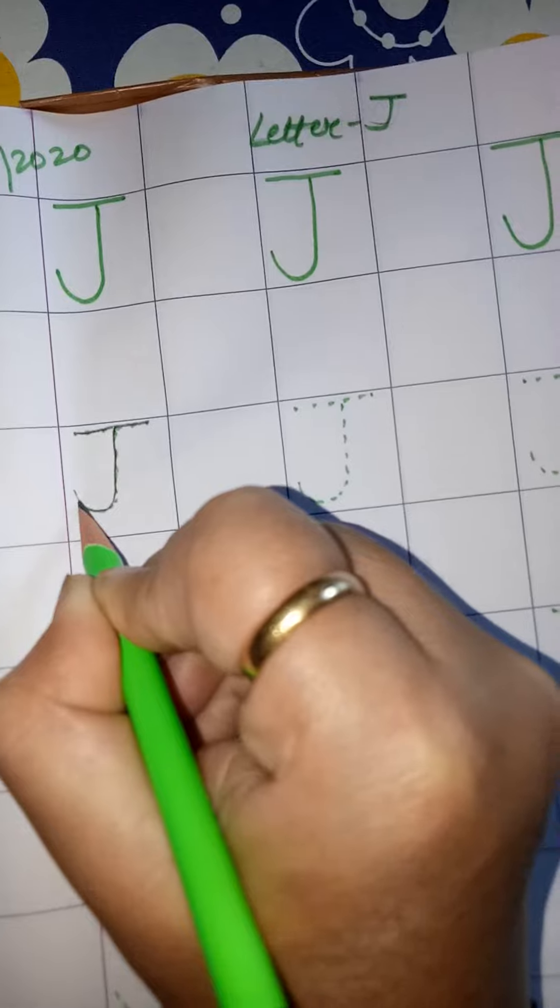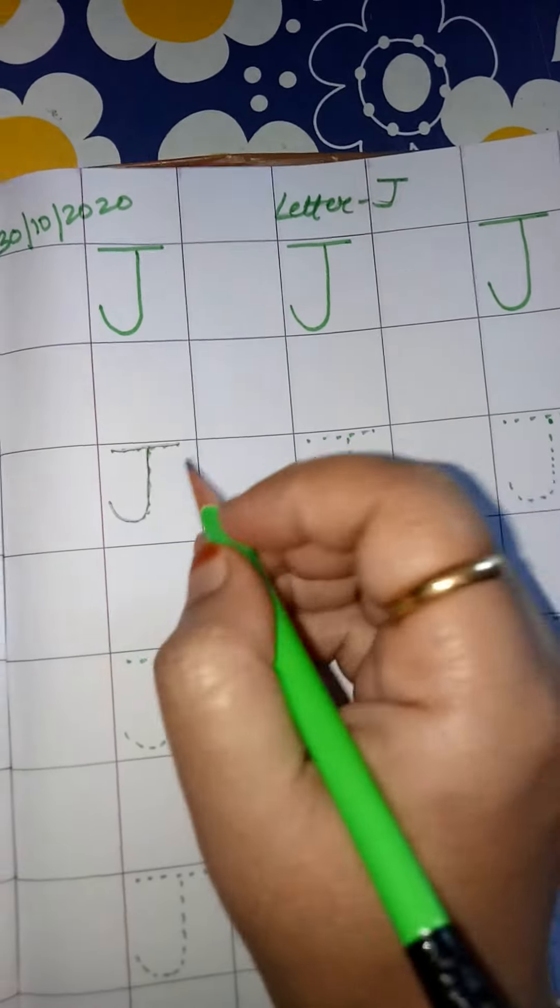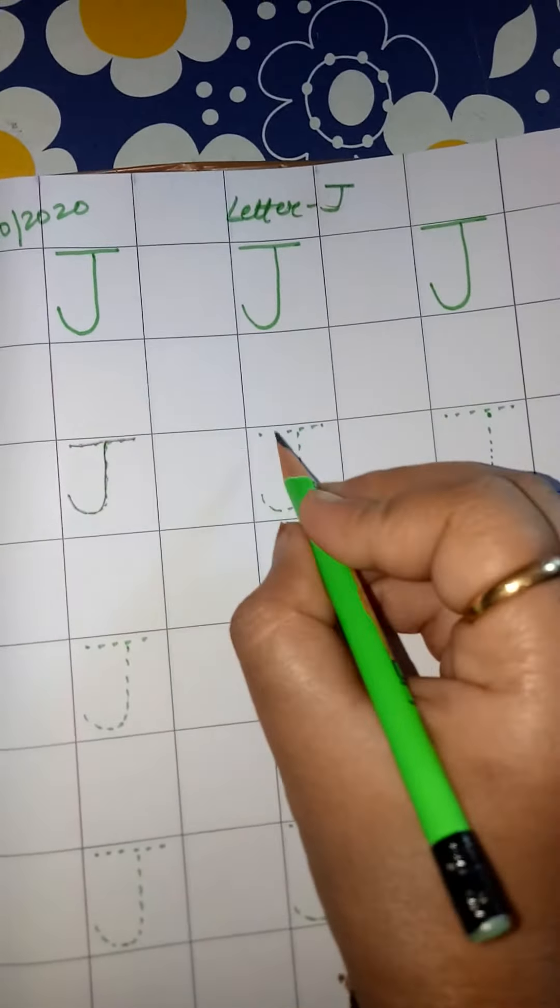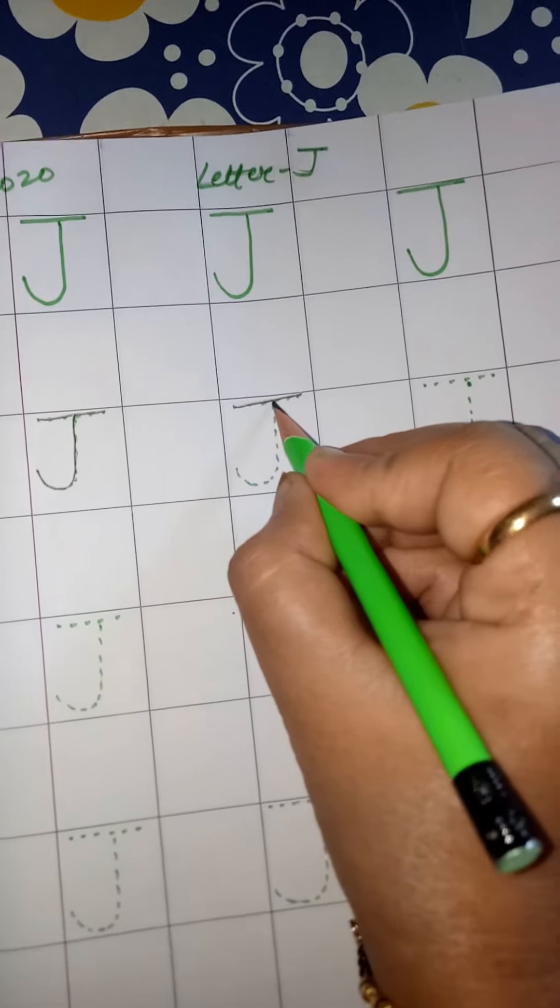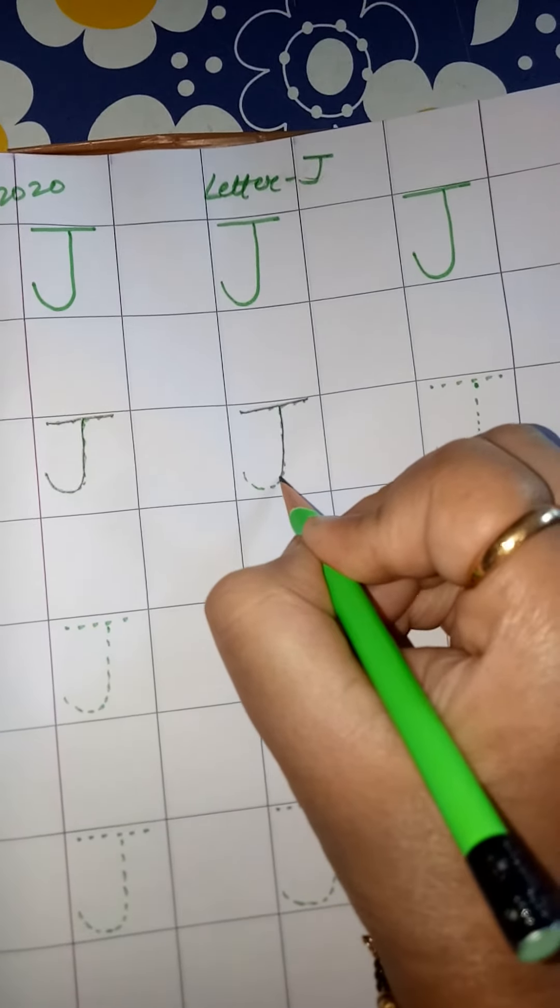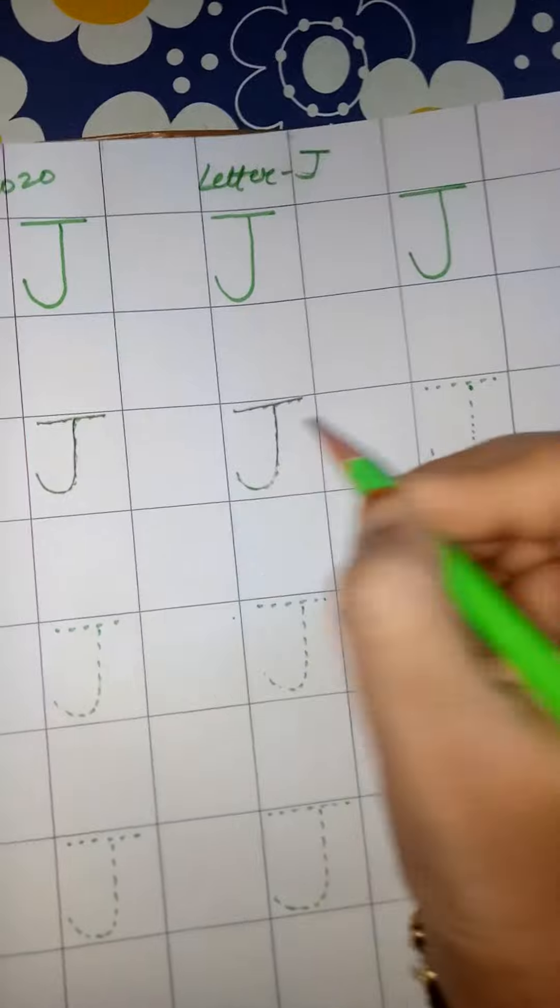Sleeping line, standing line, and then a curve. J for joker.